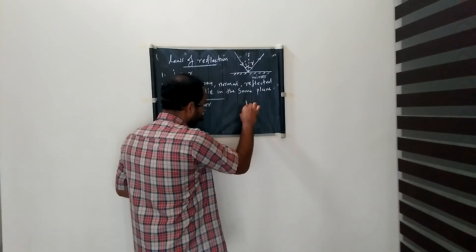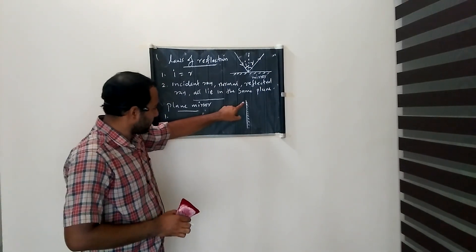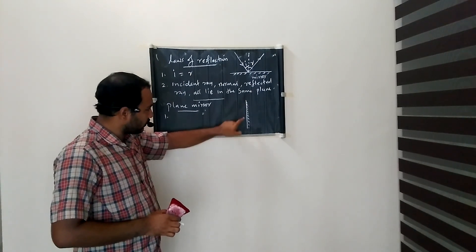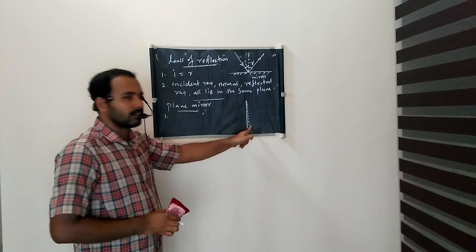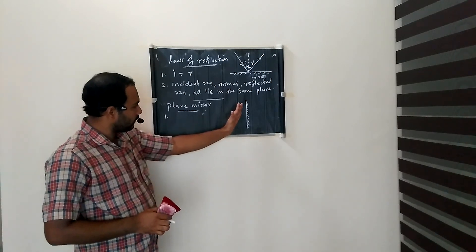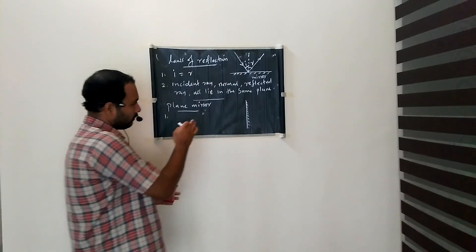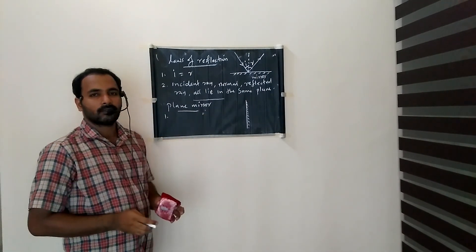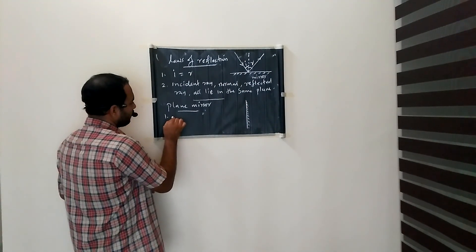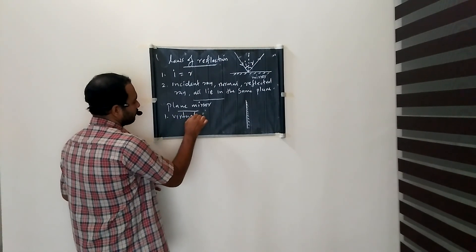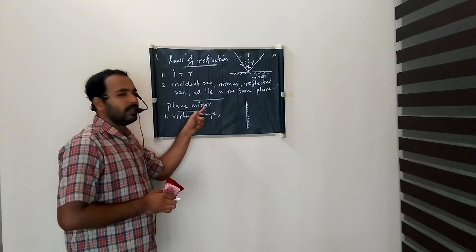This is called a plane mirror. Here is the reflecting surface — the smooth surface is the reflecting surface, while the back side is rough and painted. The first image property is that a virtual image is formed by a plane mirror.